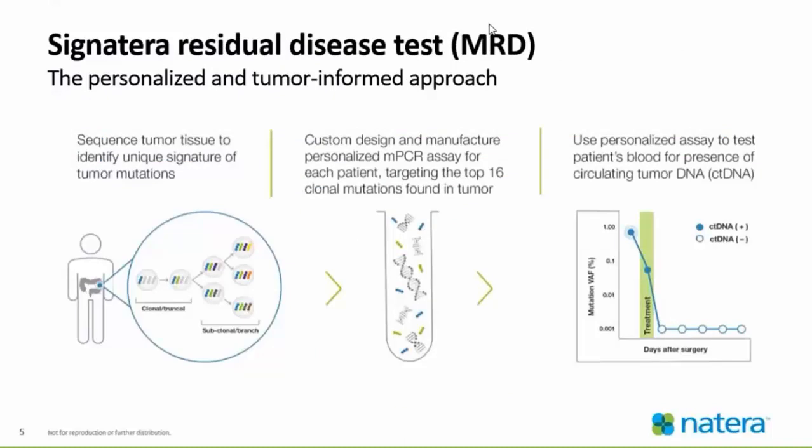So what is the Signatera Residual Disease Test? This is a personalized and tumor-informed approach. In simple terms, we take tumor tissue and look for mutations. The tumor tissue is sequenced to identify a unique signature of tumor mutations and a gene panel is set. From there, we custom design and manufacture a personalized PCR assay for each patient targeting the top 16 clonal mutations found in the tumor. We then use that personalized assay to test patients' blood for presence of circulating tumor DNA. These mutations are found in every cell, and we look at these clonal or truncal mutations to personalize each sample, making it very accurate for each individual patient.